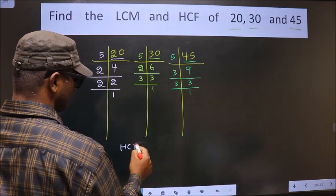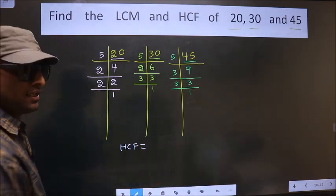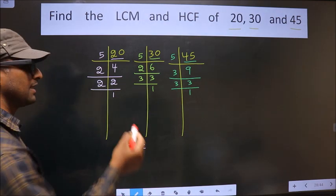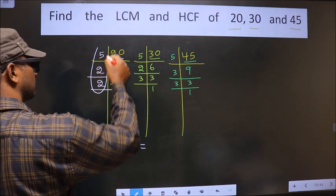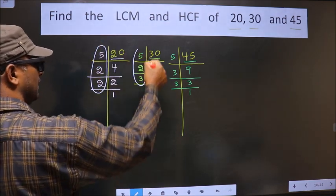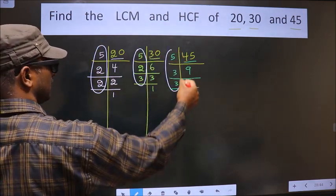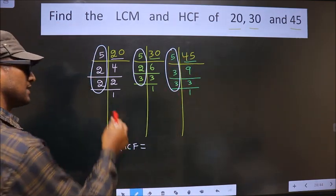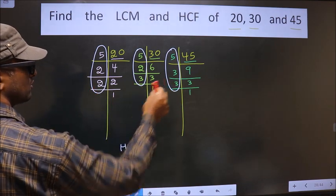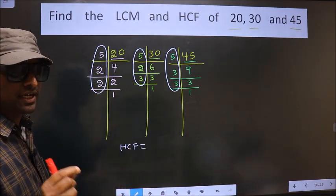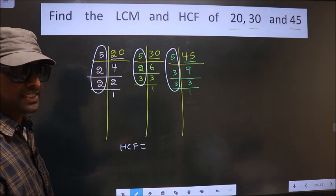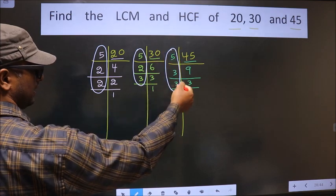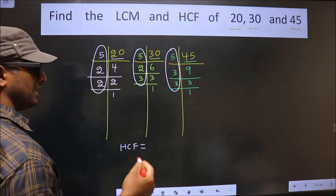So now our HCF is, HCF is the product of numbers that should be present here and here and also here. I repeat, we should find the numbers that should be present here and here and also here.